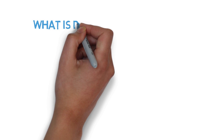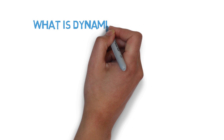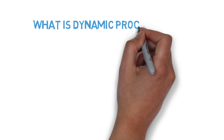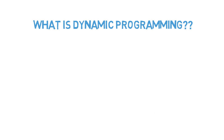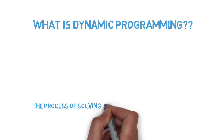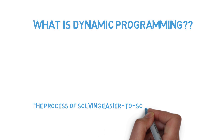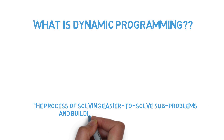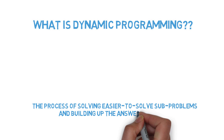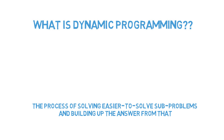But how would we do this in code? We could use something called dynamic programming. A simple way to think of dynamic programming is the process of solving easier-to-solve sub-problems and building the answer up from that.